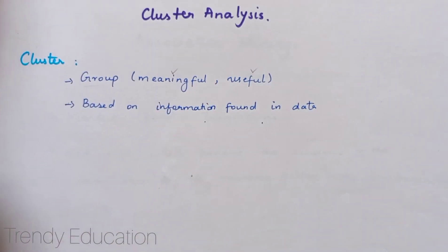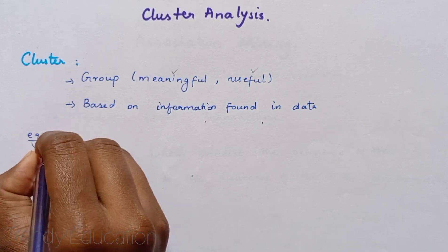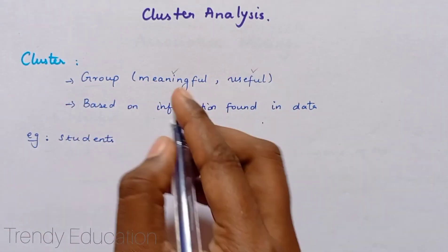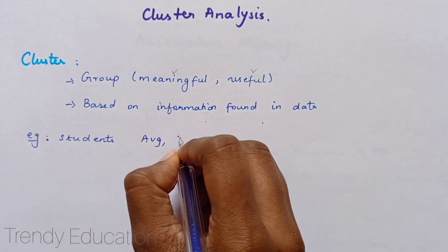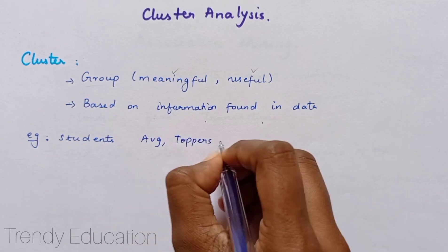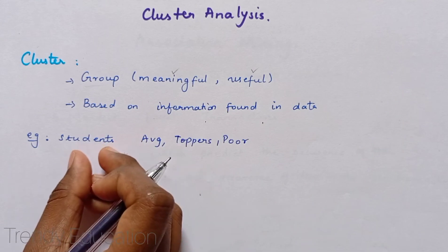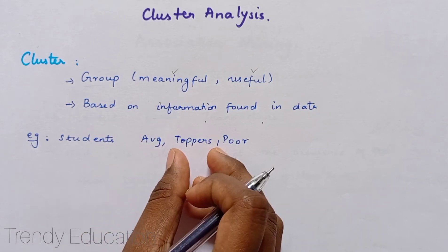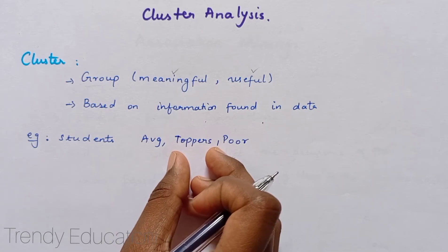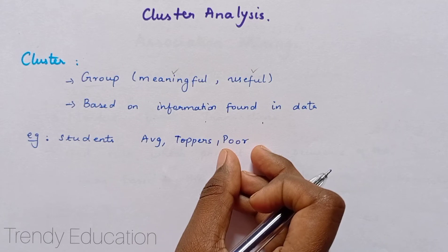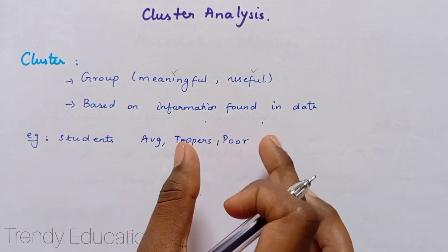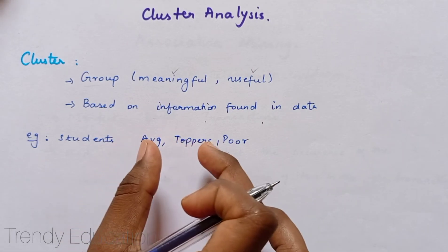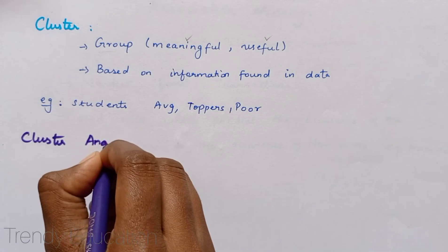I'll explain with a simple example using students. How will we group students? We classify them as average students, toppers, and poor students. Average students are those getting 60 to 80 marks. Toppers are students scoring more than 80 percent. Poor students are those who have failed or scored less than 60 percent. This is how we group the students.